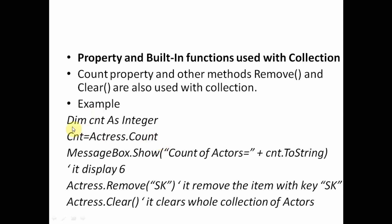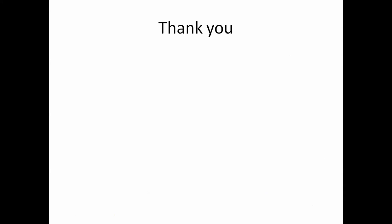Here is an example for these properties and methods. We declare Dim cnt As Integer, then assign actress.Count to cnt — it returns the total number of elements stored in the collection. We display that value using MessageBox.Show(cnt.ToString()). If there are six values, it will display six. Then actress.Remove("SK") removes the item with key SK. And actress.Clear clears the whole collection, removing every value.